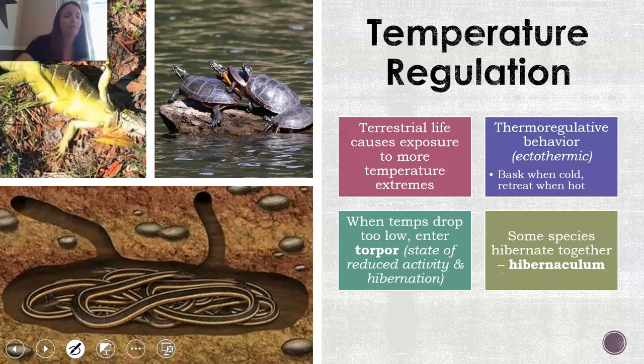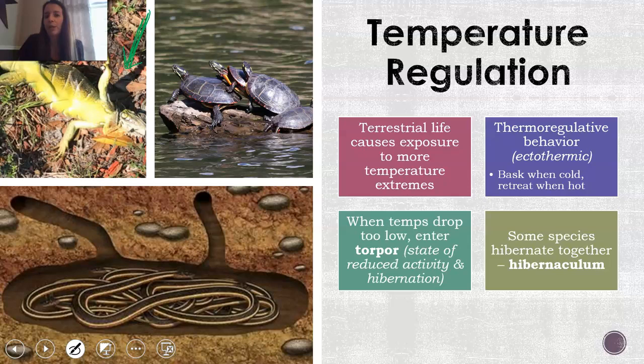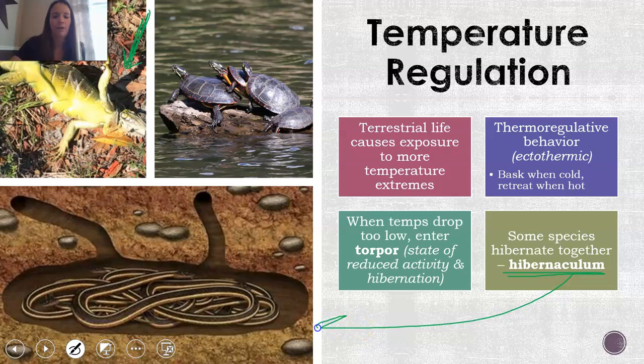This is also something you see with iguanas in Florida that fall out of trees — they're not dead, they're still alive, but they're in a state of torpor because it's too cold for their body systems to function, so activity just shuts down for a while. Some species also hibernate together, which is very common in snakes. In this area in the mountains, you'll see rattlesnakes that hibernate together, and in spring you have to be very cautious when hiking. This is called a hibernaculum, and you can see that in this picture of garter snakes.